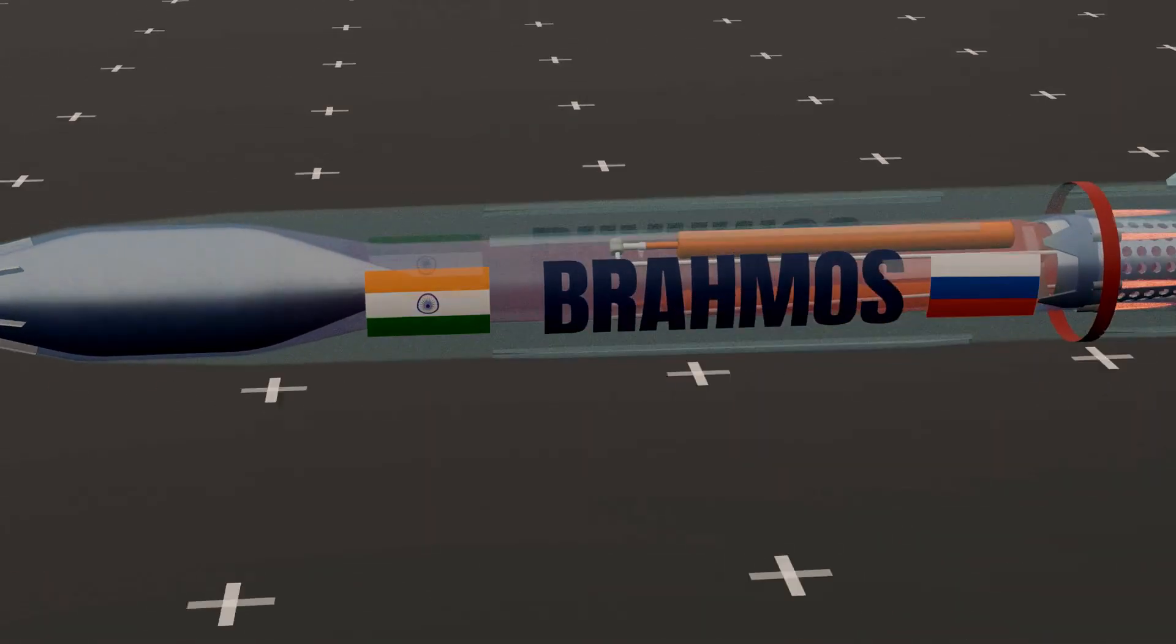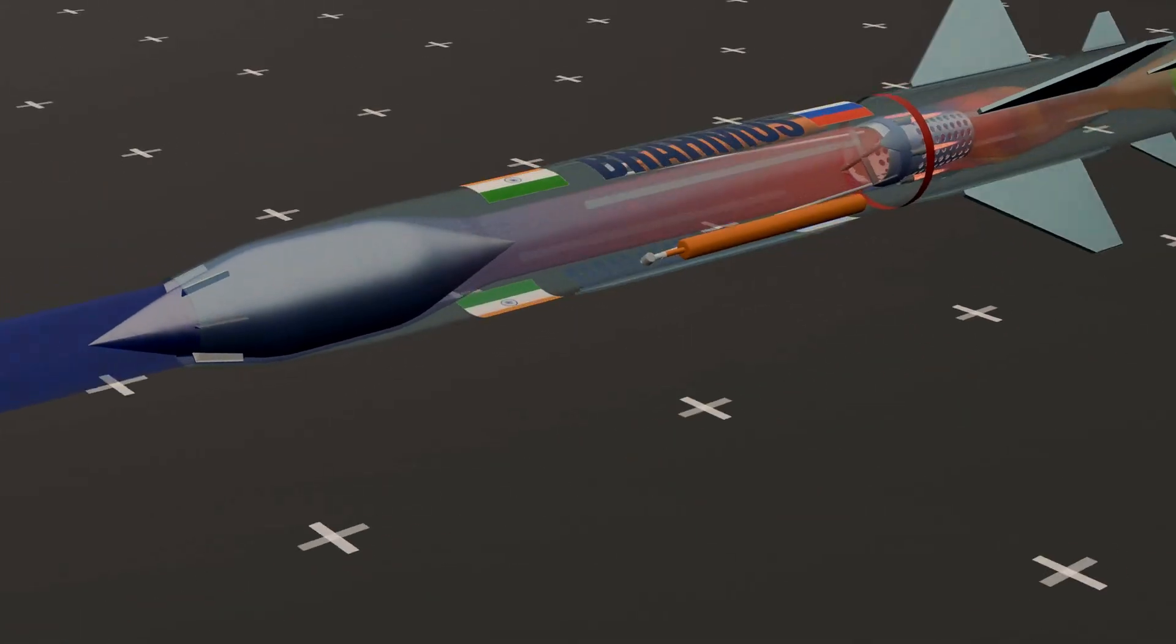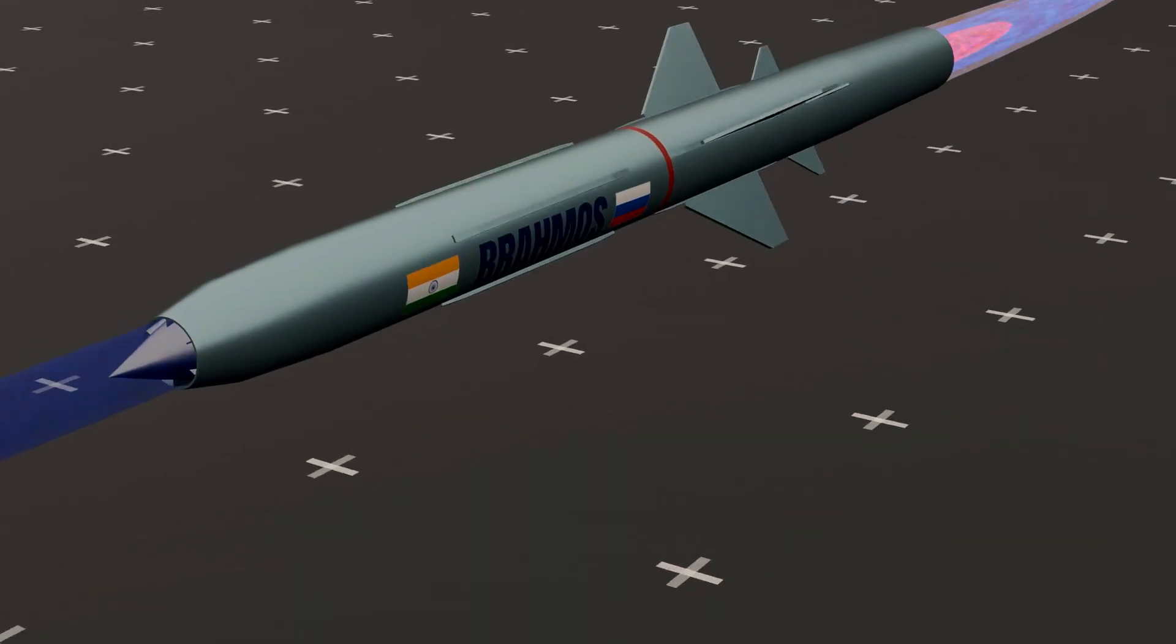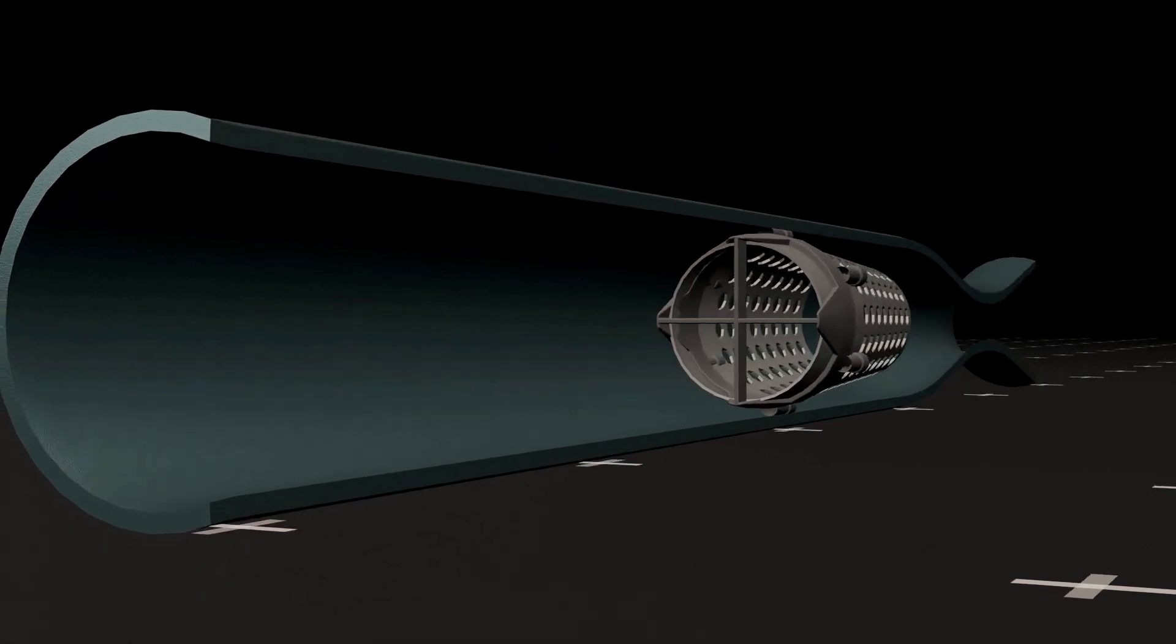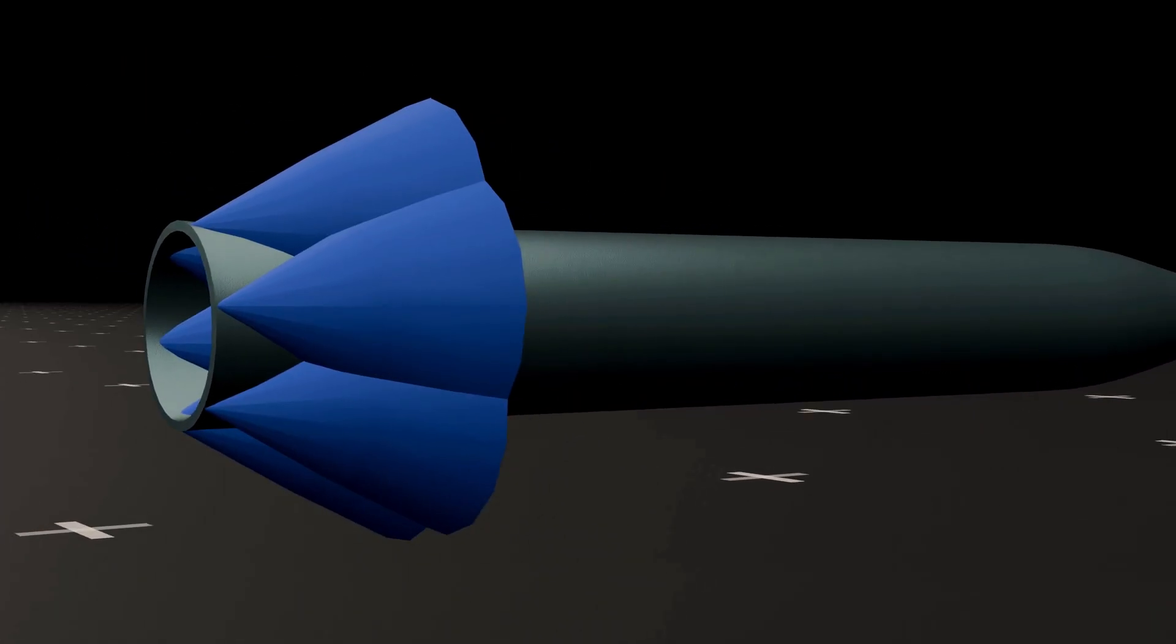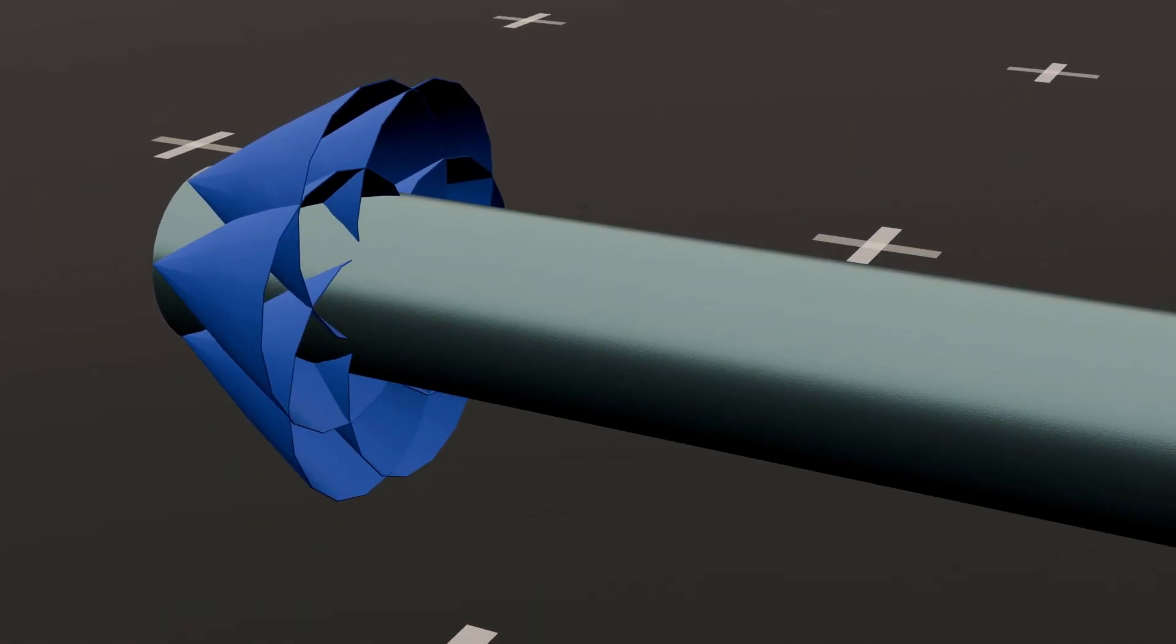The working principle of the engine is relatively straightforward. However, before diving into it, let us understand how the concept of shock waves applies here. Imagine a missile-shaped cylinder traveling at supersonic speeds. As it moves, numerous pressure waves are generated along its outer edges, forming a cone-shaped pattern around the missile.